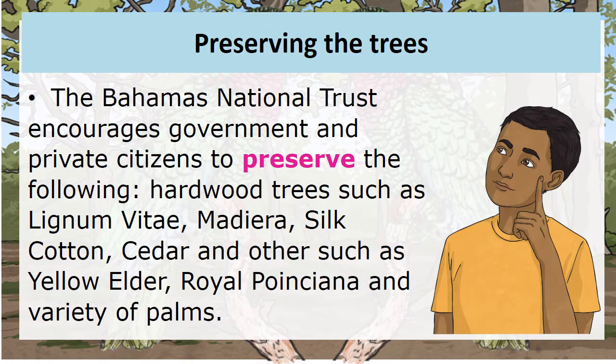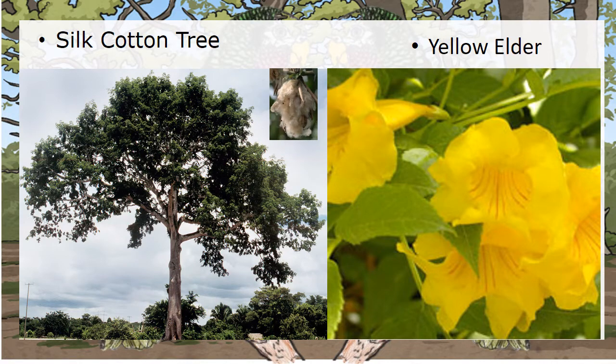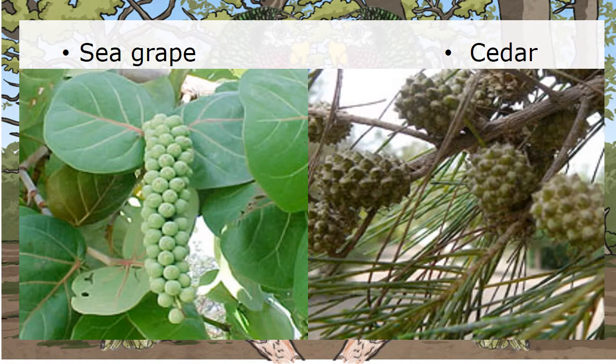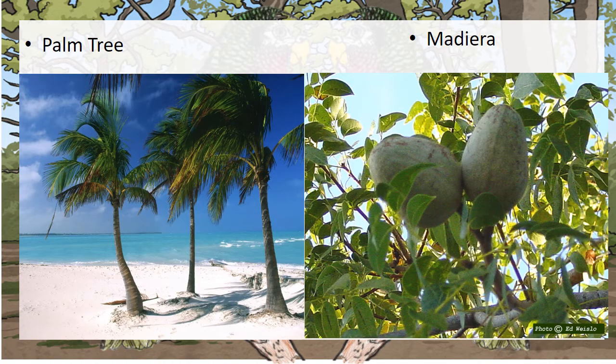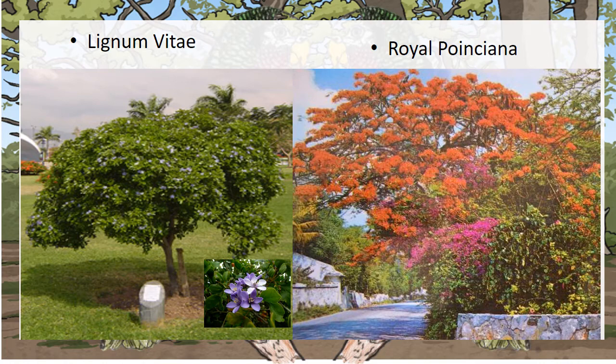The Bahamas National Trust encourages government and private citizens to preserve the following hardwood trees: the Lignum Vitae, the Madeira, the Silk Cotton, Cedar, and others such as the Yellow Elder, Royal Poinciana, and a variety of palms. These include the Silk Cotton tree, the Yellow Elder, the Sea Grape, the Cedar, the Palm tree, the Madeira, the Lignum Vitae, and the Royal Poinciana.